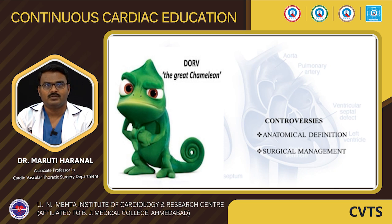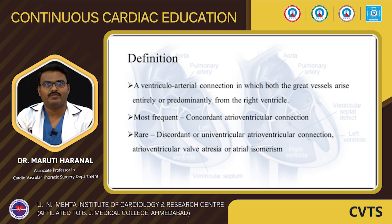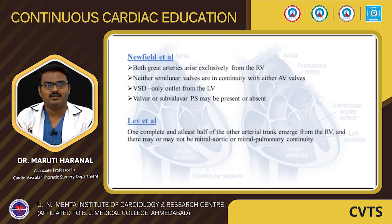Looking at the general definition, DORV is a ventriculo-arterial connection in which both great arteries arise entirely or predominantly from the right ventricle. More frequently it is associated with concordant atrioventricular connection. Rarely we can see discordant or univentricular atrioventricular connection, atrioventricular valve atresia, or atrial isomerism. A lot of controversy exists in its definition.